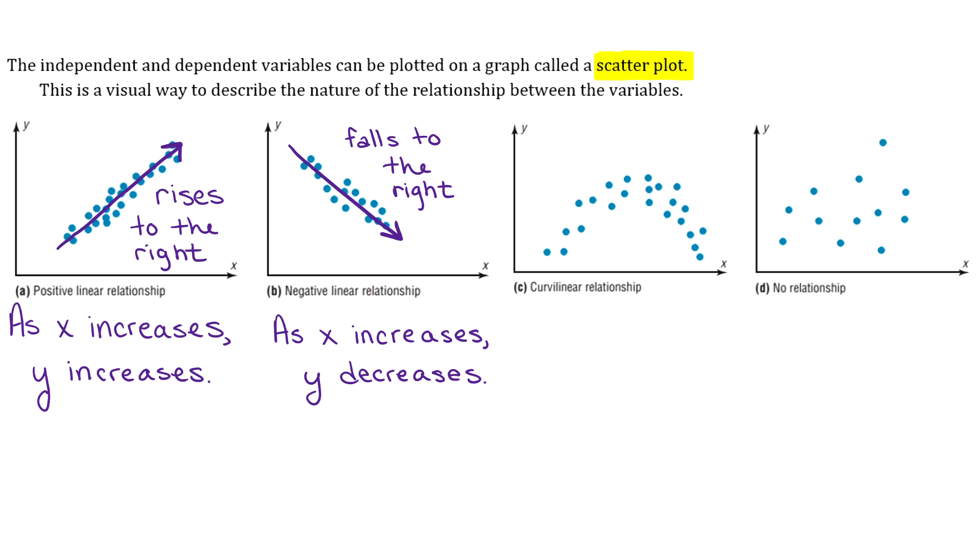There are other relationships that exist. Example C shows a curvilinear relationship where points are clustered around a curve. There are many other examples of different relationships we won't get into. Example D shows what a scatter plot might look like if there's no relationship—points are scattered all over, which tells you there is no correlation between the variables.